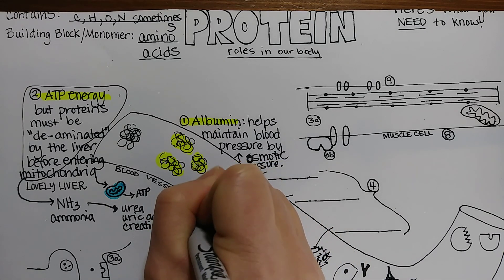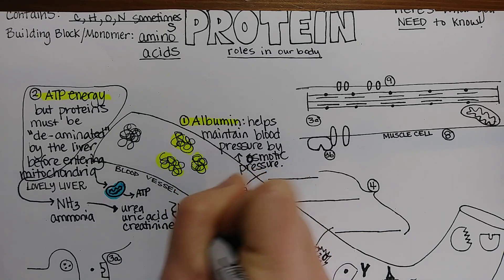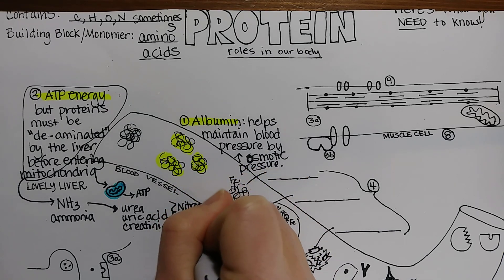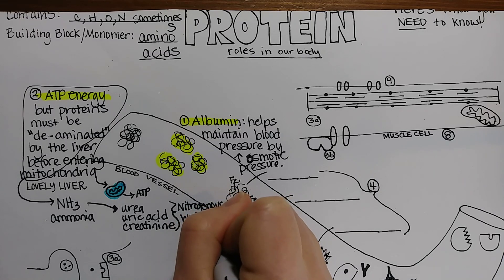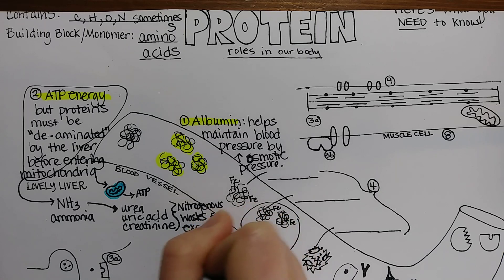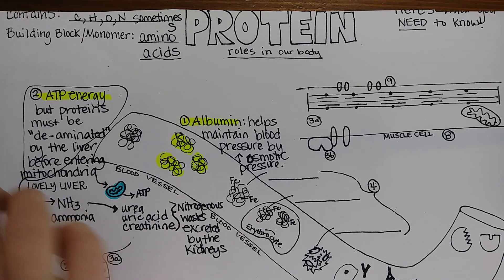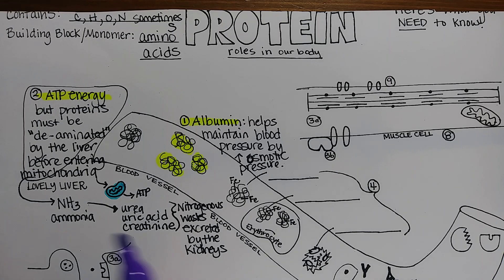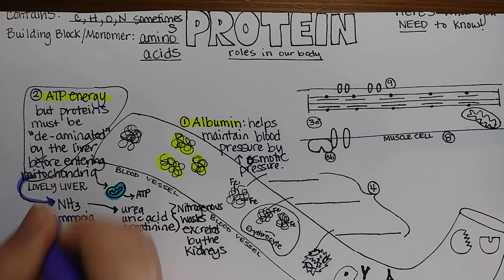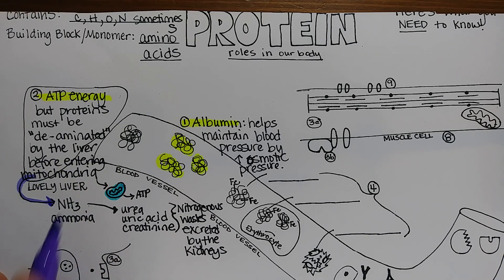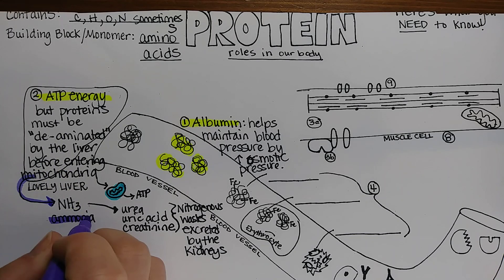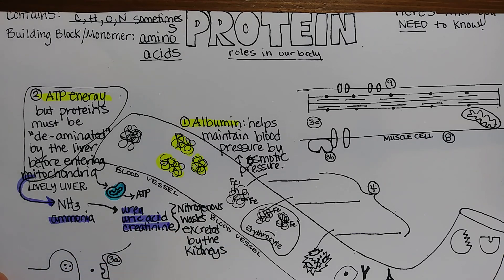All of these — urea, uric acid, and creatinine — are nitrogenous waste products that have to be excreted, and you can thank your kidneys for that. By using proteins for energy or even breaking them down to recycle them, you end up with ammonia that must be converted into one of these slightly less toxic forms of nitrogenous waste, which can then be excreted by the kidneys.